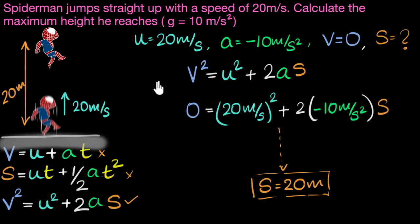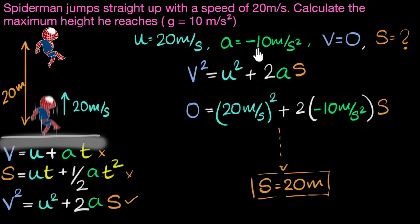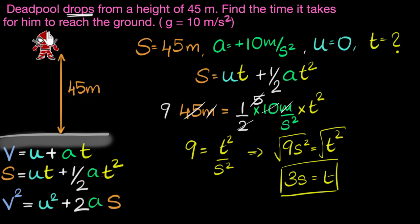Whenever things are falling under gravity, because they have a constant acceleration, we can always use the three equations of motion to solve our problems. A couple of things to be careful about: one is the sign of the acceleration — when objects are thrown up, their velocity decreases so acceleration is negative; if thrown down, acceleration is positive. Another thing is that some data is hidden — for example, 'maximum height' implies final velocity is zero, and 'drops' implies initial velocity is zero.